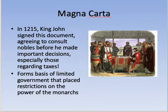One of those documents is the Magna Carta. In 1215, King John signed this document in consultation with many nobles to ensure his decisions — especially regarding taxes — were agreed upon. It forms the basis of limited government, putting restrictions on the monarch's power.